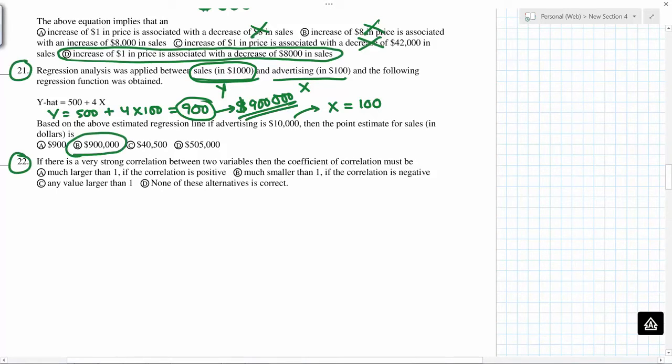If there is a very strong correlation between two variables, then the coefficient of correlation must be larger than 1. It is never larger than 1. So r, which is the coefficient of correlation, is always between negative 1 and positive 1.